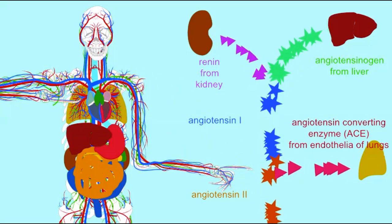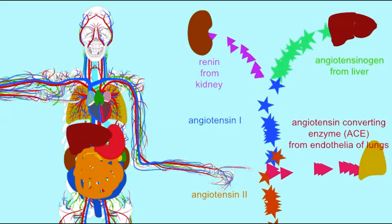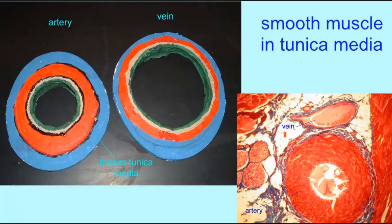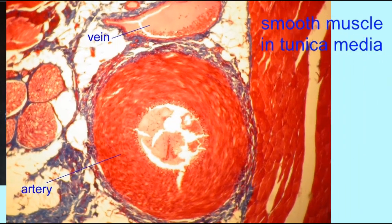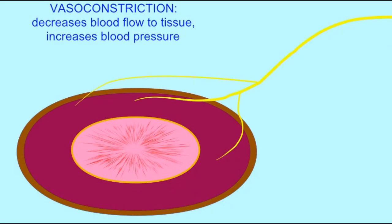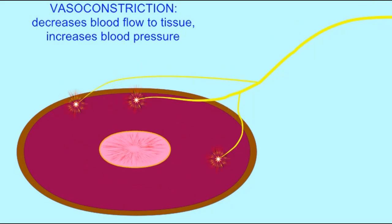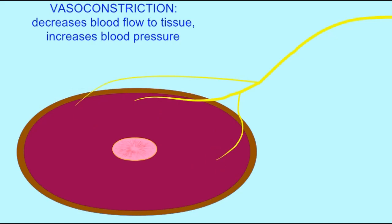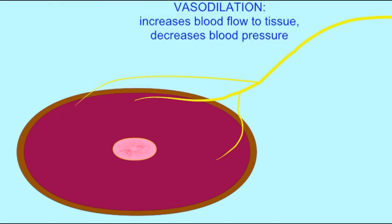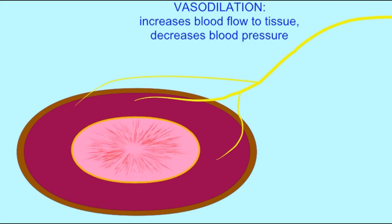Angiotensin-2 then promotes vasoconstriction, where smooth muscle around blood vessels constricts, which raises blood pressure. It also has other roles, such as promoting cell growth — both hypertrophy and hyperplasia — and being pro-inflammatory.